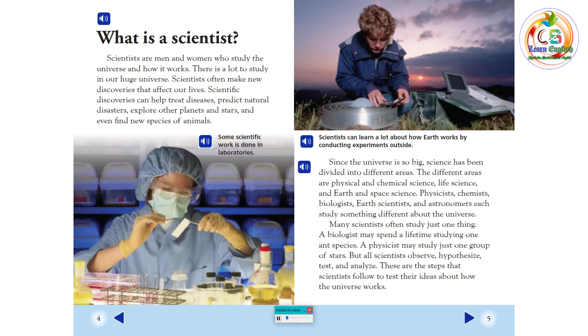science has been divided into different areas. The different areas are physical and chemical science, life science, and Earth and space science. Physicists, chemists, biologists, Earth scientists, and astronomers each study something different about the universe.